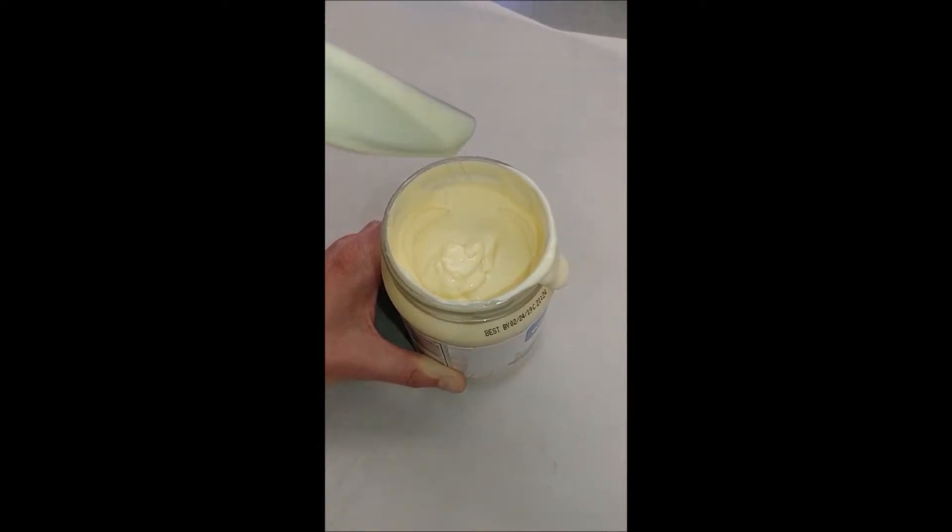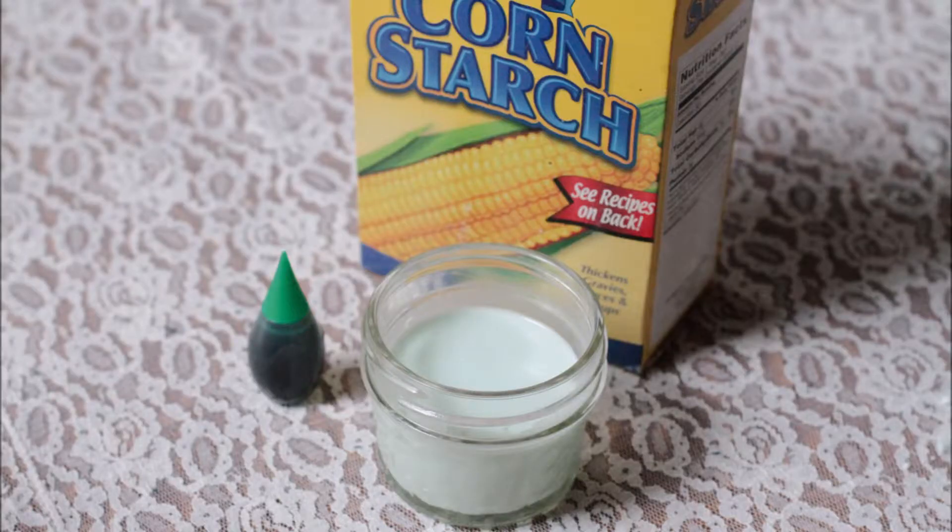By the same note, shear thickening fluids become thicker as you stir them. This means that they put up more resistance to the stirring as you continue to mix them. You can see this acted out if you were to add cornstarch to hot water. The solution will thicken as the cornstarch granules swell.